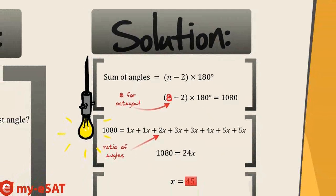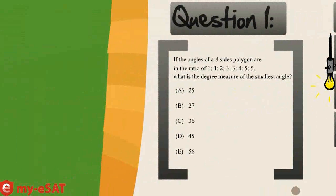Do the math, and it looks like x equals 45. And since the smallest angle ratio was 1x, 45 is the smallest angle, making d the correct answer.